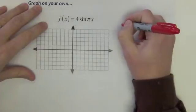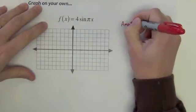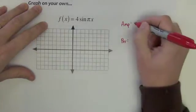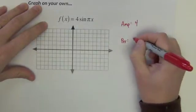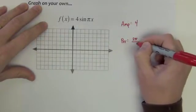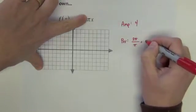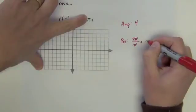So I need to know two things. I need to know for every graph I do what's the amplitude and what's the period. Amplitude is 4. Period is found by taking 2π dividing by the coefficient of x which is π. So the period is 2.